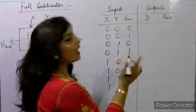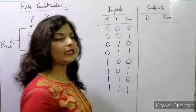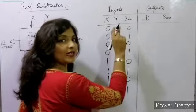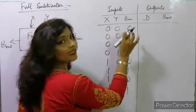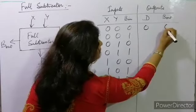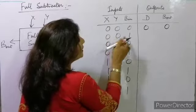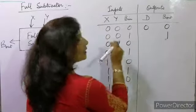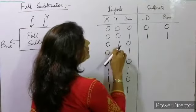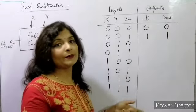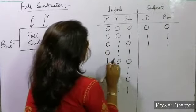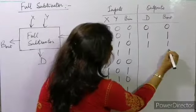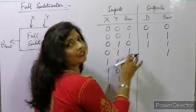Now we will see the truth table. Inputs are x, y and borrow in (B in), and there will be 2 outputs: D and borrow out. We are subtracting x minus y minus B in. So: 0−0−0 gives difference 0, borrow 0. Then 0−0−1: we need to borrow 1, difference becomes 1, borrow 1. Then 0−1−0: again borrow 1, difference 1, borrow 1. Then 0−1−1: borrow 1 again, difference 0, borrow 1.